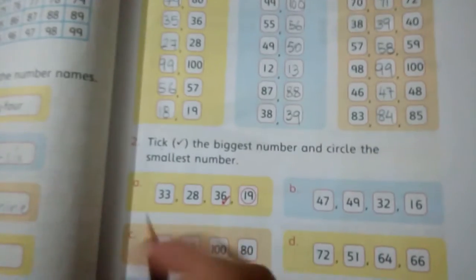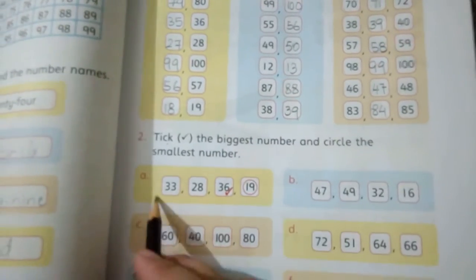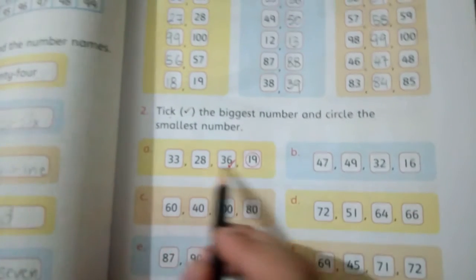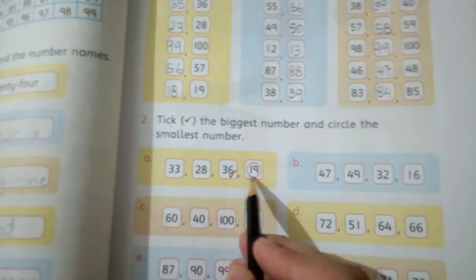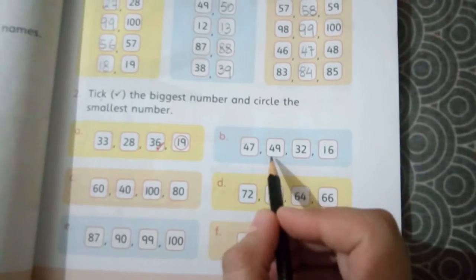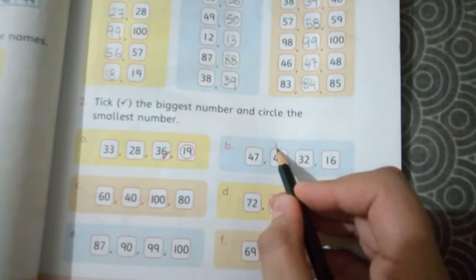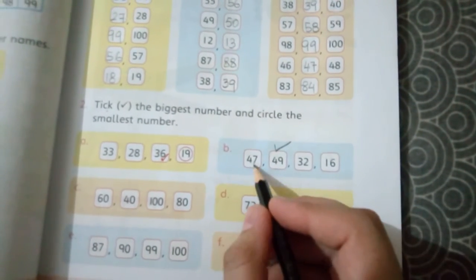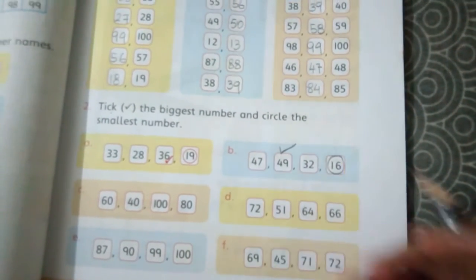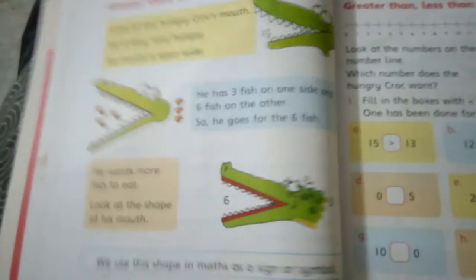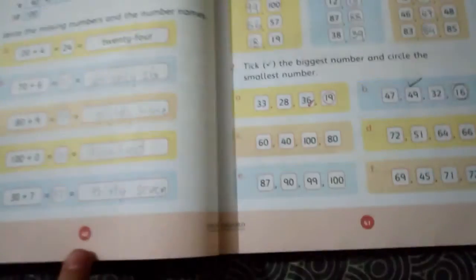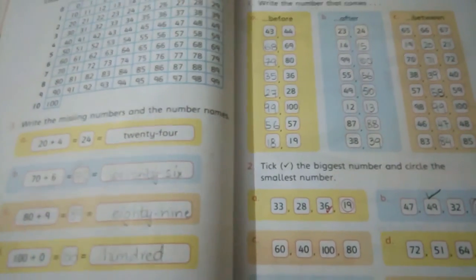So this is the work. Question 2: Tick the biggest number and circle the smallest number. The first part is done for you - the biggest is ticked and the smallest is circled. In part B, which is the biggest number? 47, 49, 32, 16 - 49 is biggest, so tick mark on top of it. And circle the smallest, which is 16. Parts C, D, E, F you have to do now.